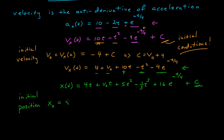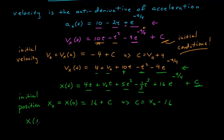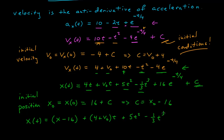Plugging t equals 0 into the position expression: all polynomial terms vanish, e to the 0 is 1, giving 16 plus c. So c equals x-naught minus 16. The final trajectory, grouping by powers of time, is: x-naught minus 16 plus (4 + v-naught)t plus 5t squared minus one-third t cubed plus 16e to the minus t over 4.